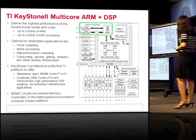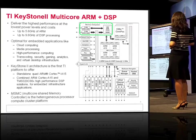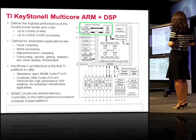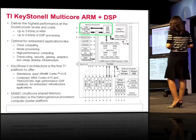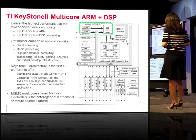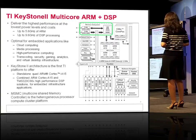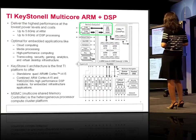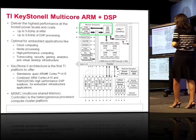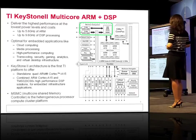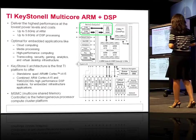Keystone 2 is a platform that enables multi-core ARM, multi-core DSP, or multi-core ARM plus DSP. We deliver the highest performance at the lowest power levels — up to 5.6 GHz of ARM. The calculation is that one ARM cluster has four cores, each running at 1.4 GHz, so 1.4 times 4 equals 5.6 GHz.